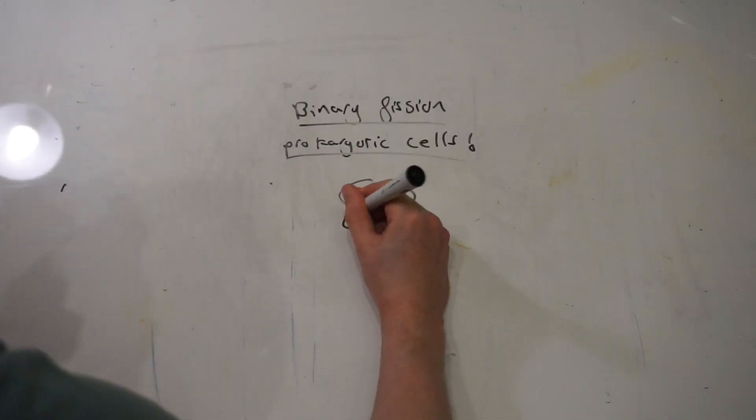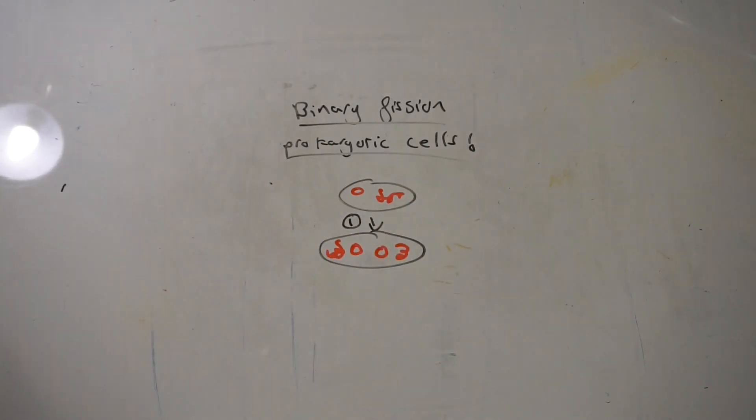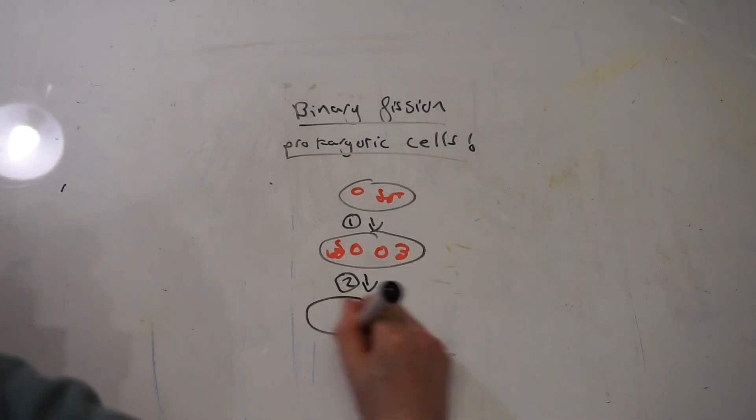So that makes sense then that they divide in a very simple way, which we call binary fission. It's pretty simple - basically the cell splits into two. There's a bit more to it than that, though.